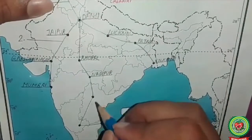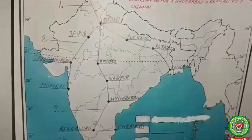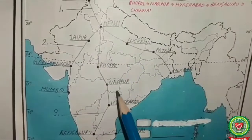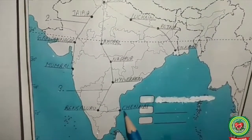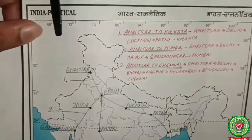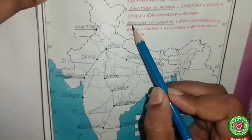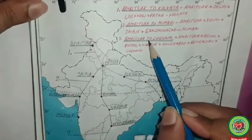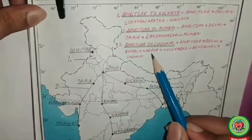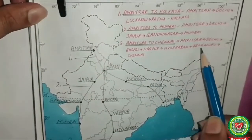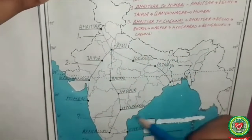Mark all the points — Nagpur, Hyderabad, Bengaluru, and Chennai. This is the complete route from Amritsar to Chennai. Write it as route number three: Amritsar to Chennai — via Amritsar, Delhi, Bhopal, Nagpur, Hyderabad, Bengaluru, and finally Chennai.